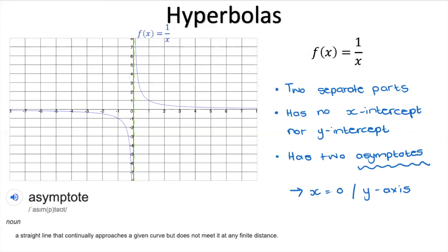There is a second asymptote: y = 0, which is the x-axis. The graph doesn't cross the x-axis either, but it looks like it's starting to get very close. These two asymptotes are what make hyperbolas unique.